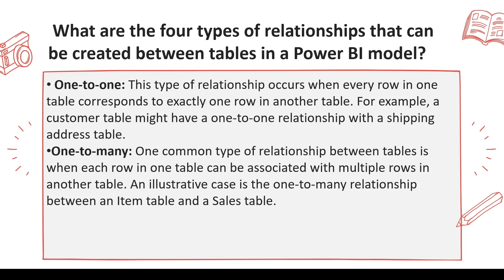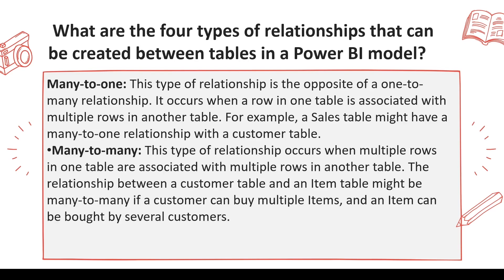One-to-many occurs when one row of a table is associated with multiple rows of another table. This typically happens between a dimension and a fact table. The dimension contains unique values of dimension IDs like item ID or geography ID, and those keep repeating in the fact tables which have multiple occurrences of such values.